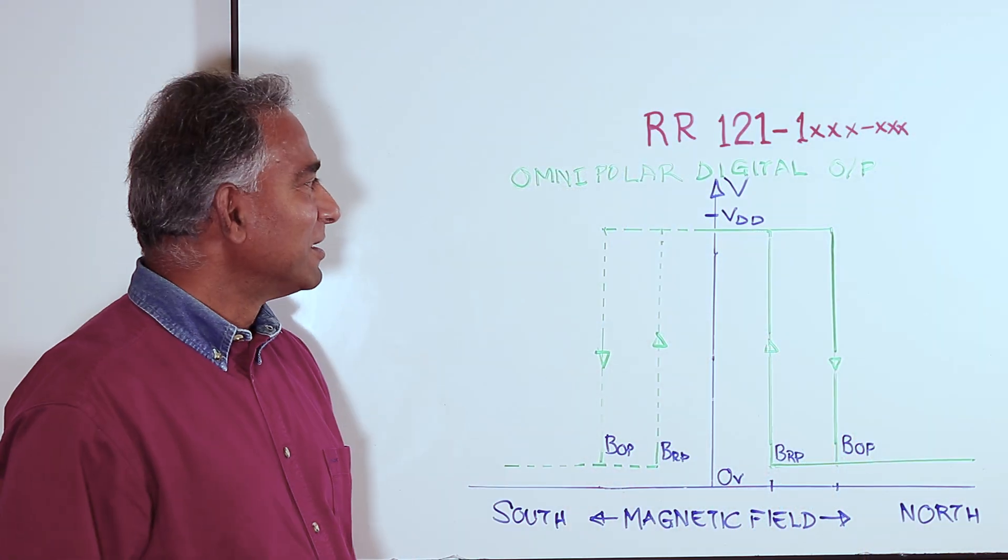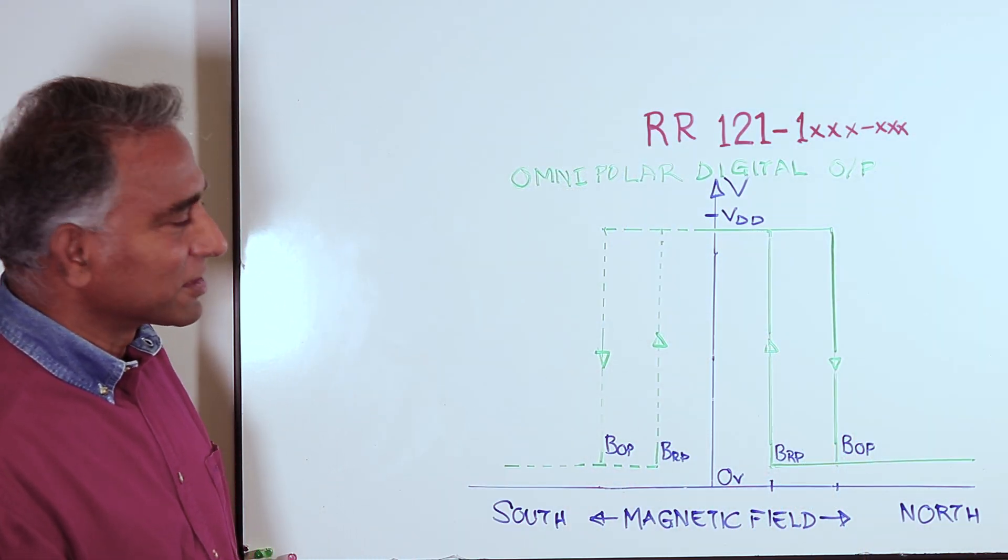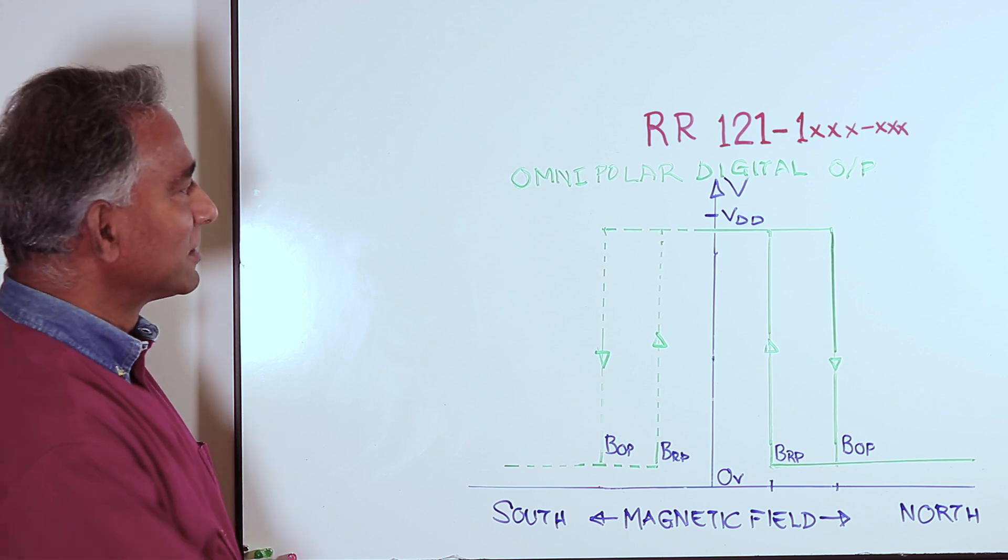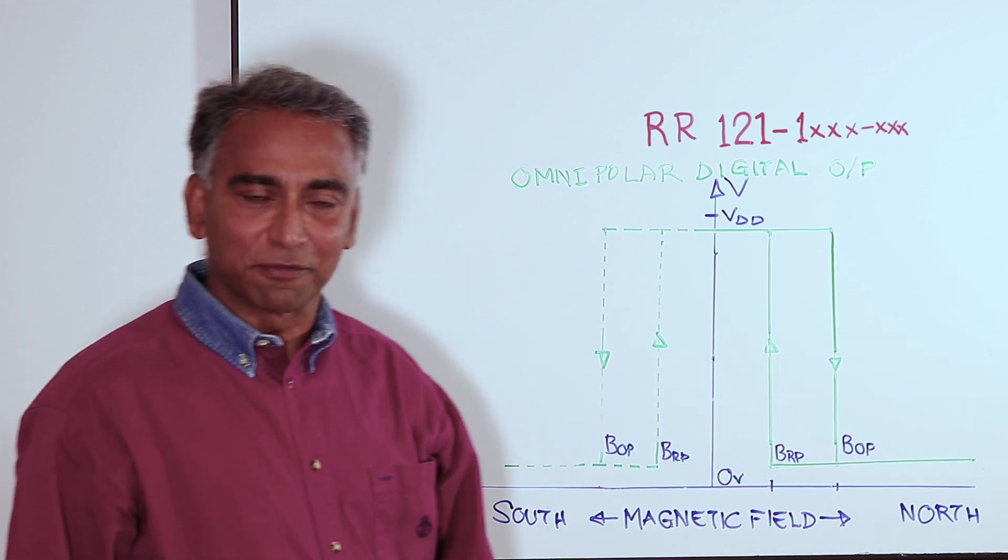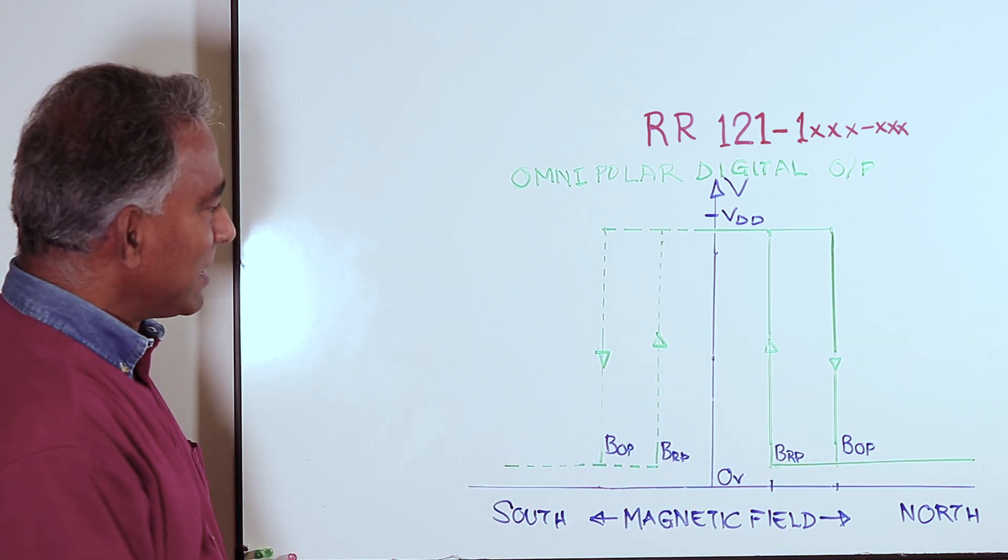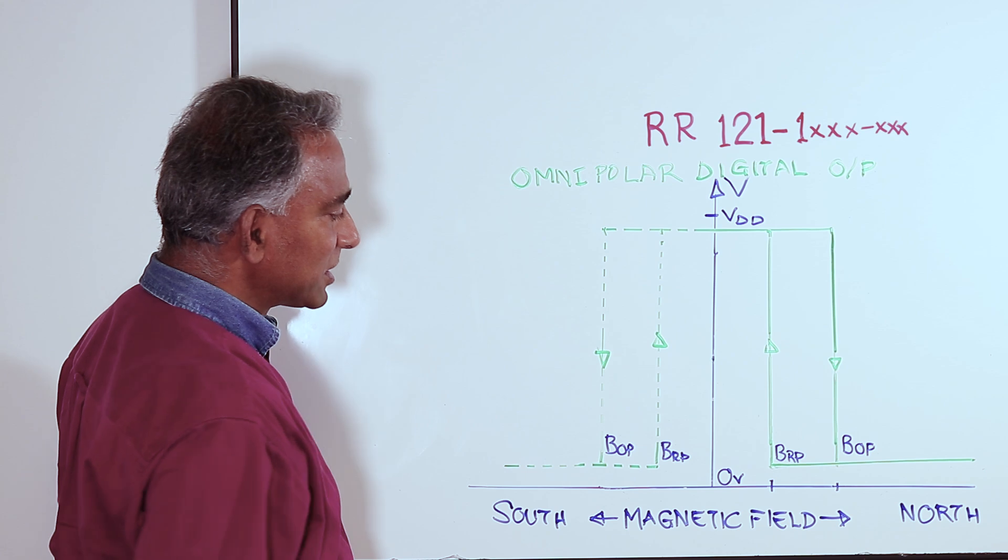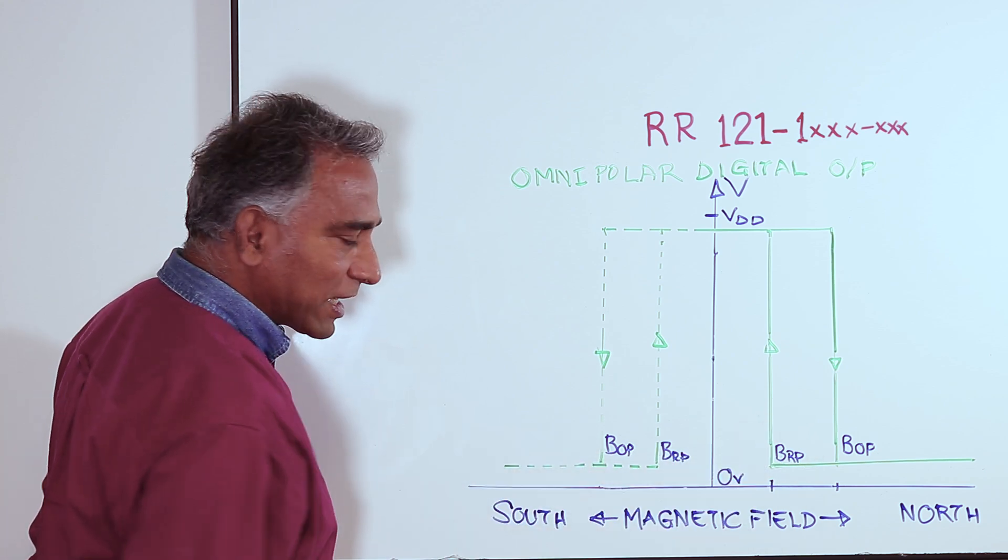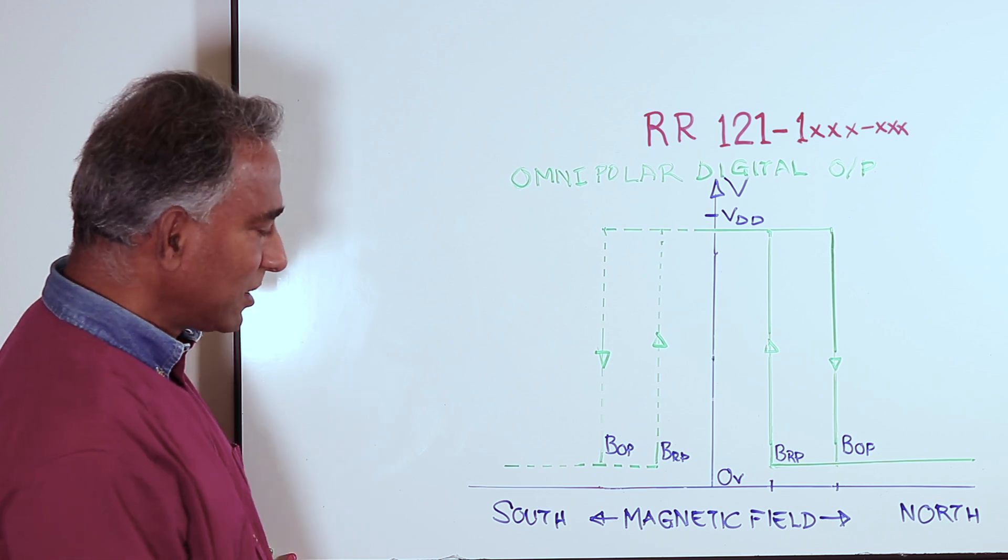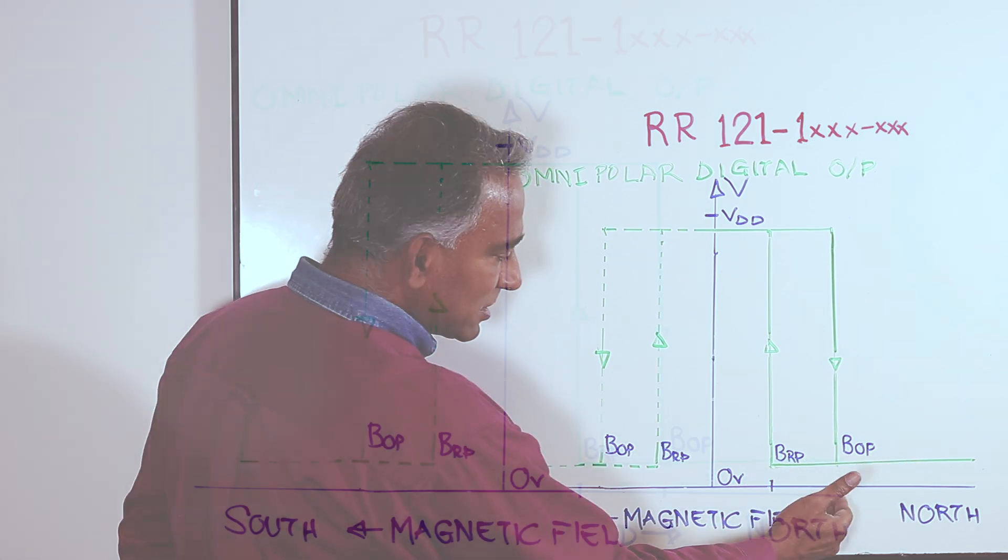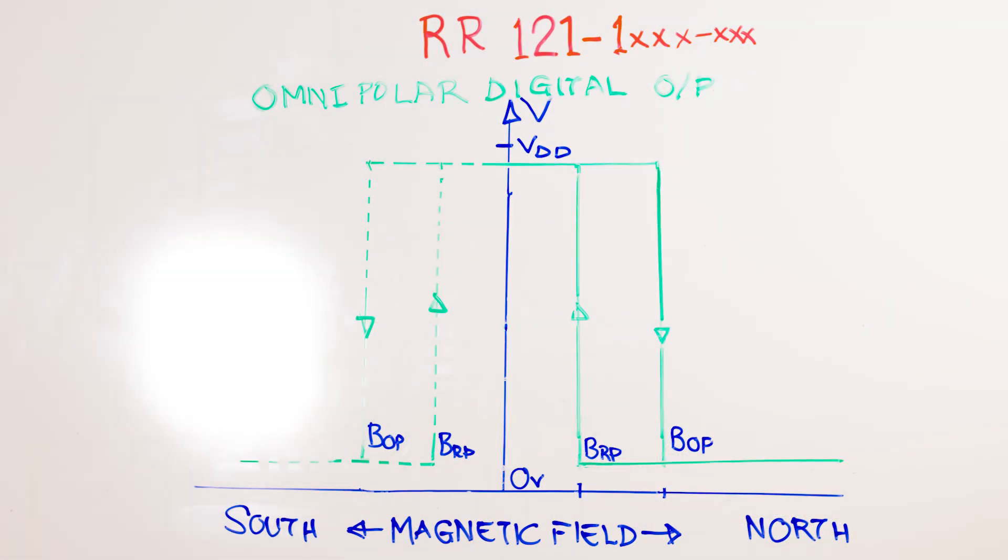This chart represents the output from an omnipolar digital sensor from KOTO Technologies, such as the RR-121-1 XXX, representing different variants available. On the vertical axis is the voltage output from the sensor and the horizontal axis is the magnetic field strength from an approaching or receding magnet. On the right side is increasing field strength from the north pole and on the left side is increasing field strength from the south pole. The green lines here represent the output from the sensor itself.